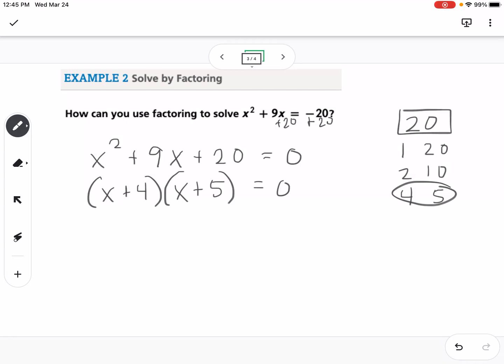Just like the previous problem, I can set each of these factors into equations equal to zero. So then if I subtract 4 over here, I would get x equals negative 4 and x equals negative 5. Those would be my two solutions, the two spots where this graph crosses the x-axis.